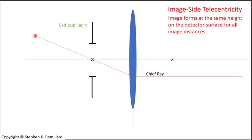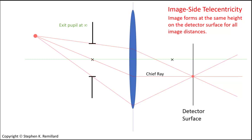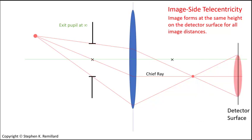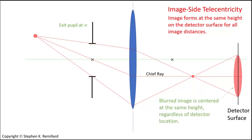If the chief ray is parallel to the optic axis on the image side of the imaging system, then the telecentricity is image-sided. The image still focuses at the point predicted by the Gaussian lens equation, but by positioning the aperture stop at the front focal point, the image height is the same for all image distances. This means that you can move the image detector and the image only blurs, but it doesn't change size. The average height of light in the blur is the same regardless of where along the optical axis you put the image surface.